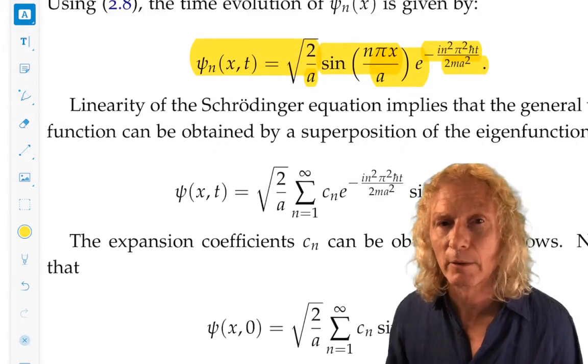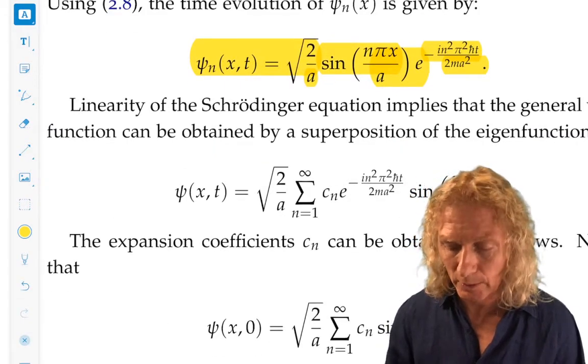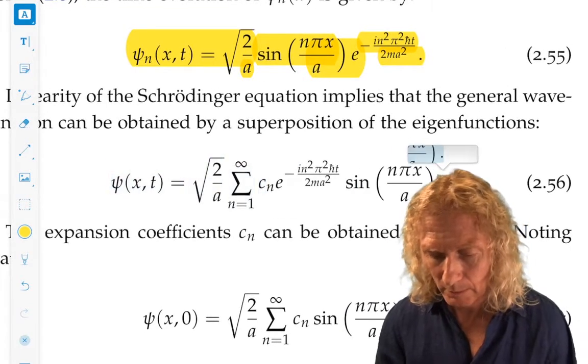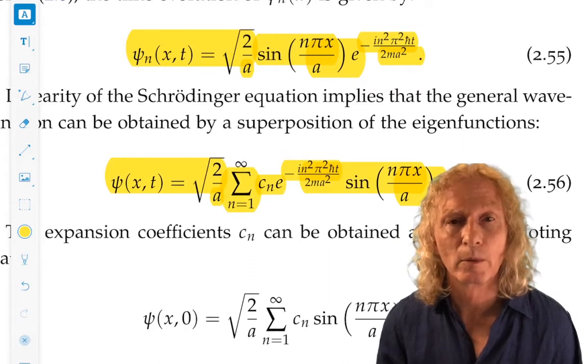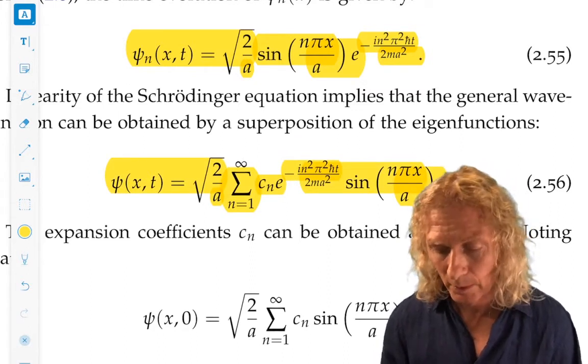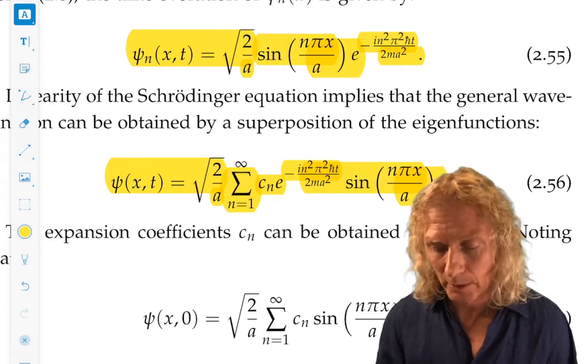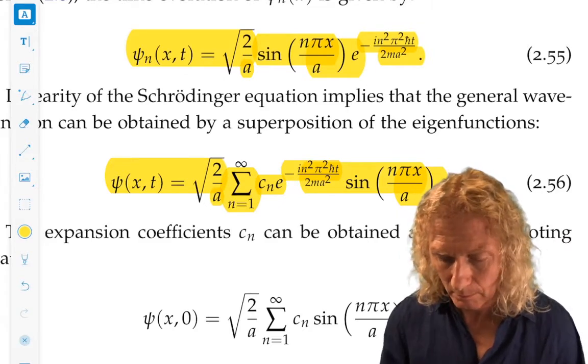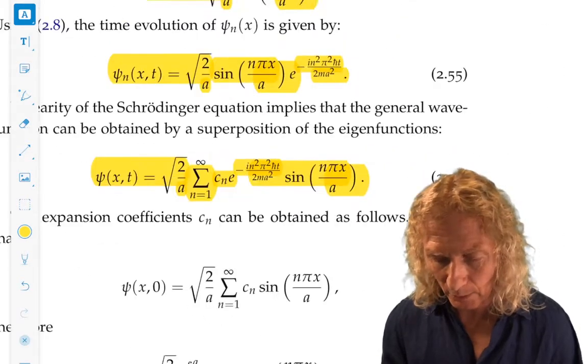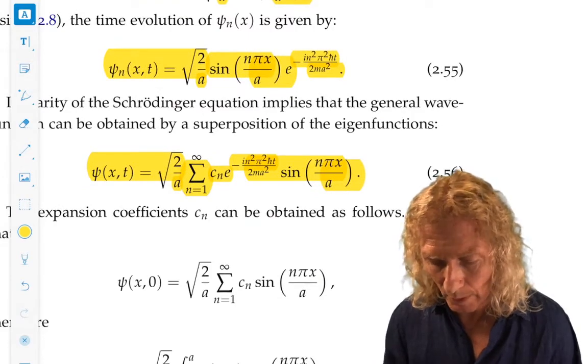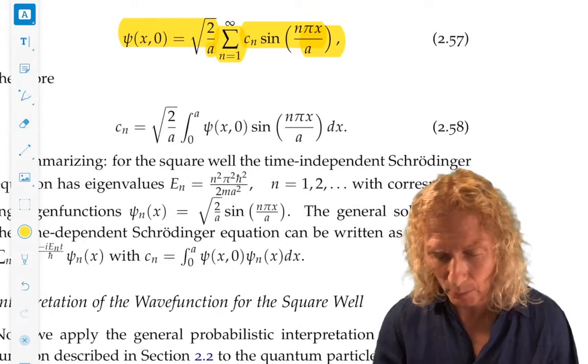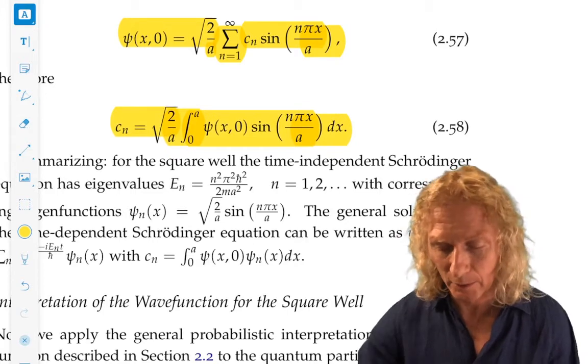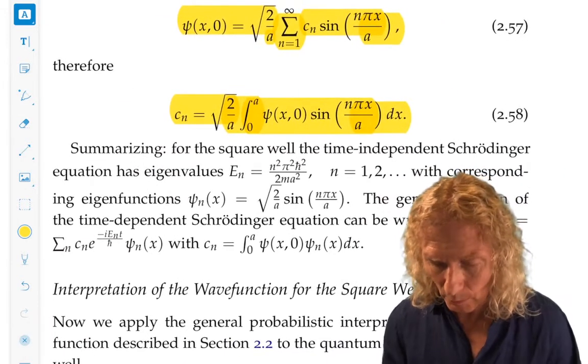So, linearity of the Schrödinger equation, think back to the first lecture in this chapter, means that the general solution is a sum over the eigenstate with the appropriate time dependence factor, depending on the eigenvalue, energy eigenvalue, and we have a constant out front, cn. We can compute the expansion coefficients in this way by setting t equals zero, and then computing the inverse by orthogonality, essentially.